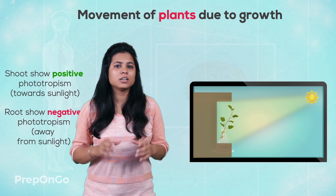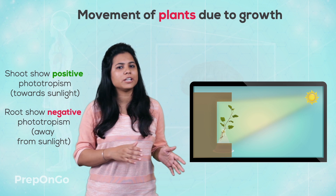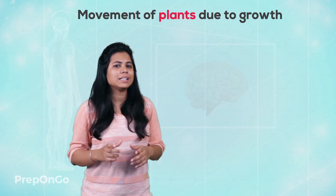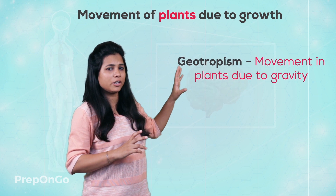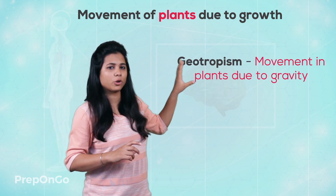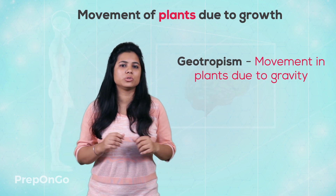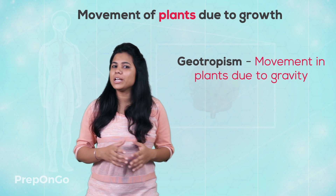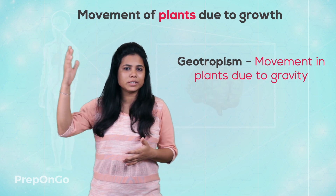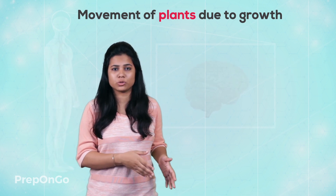So we can say that plants respond to phototropism both positively and negatively. Now let's have a look at the second agent which affects tropism, which is geotropism. In geotropism the plant is affected due to gravity. Normally we see that the shoots are towards the sky and the roots are downwards into the soil.